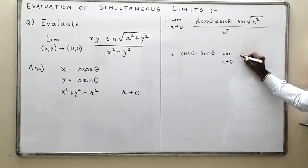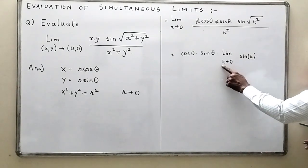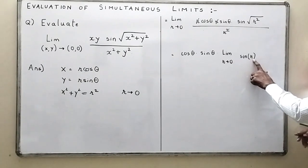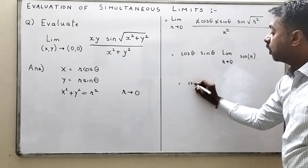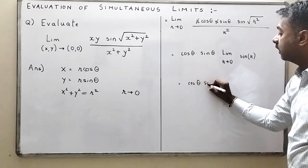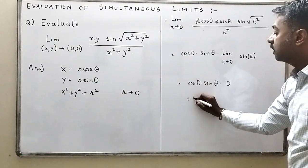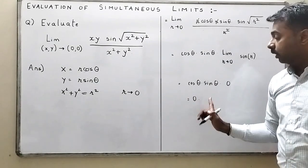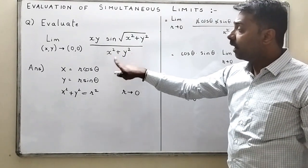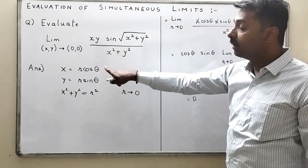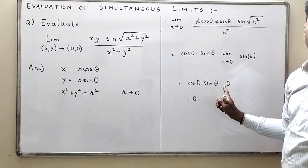cosθ sinθ comes outside the limit, and inside we just have sin(r). The limit as r → 0 of sin(r) is sin(0) = 0. So the result is cosθ · sinθ · 0 = 0. This limit is also 0. Whenever you have x² + y², always try polar form x = r cosθ, y = r sinθ to quickly evaluate these limits.